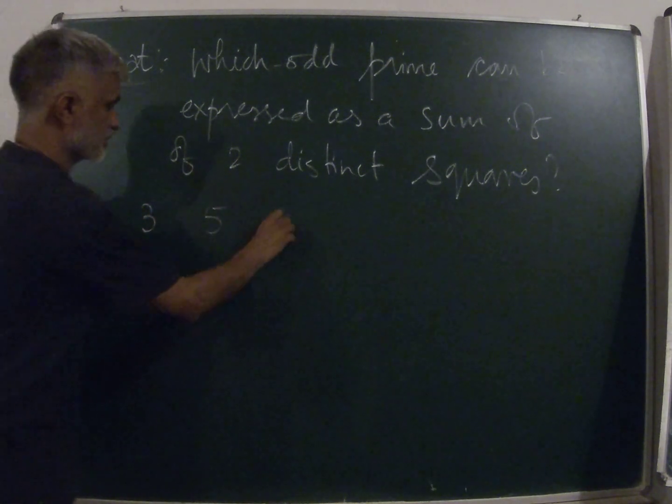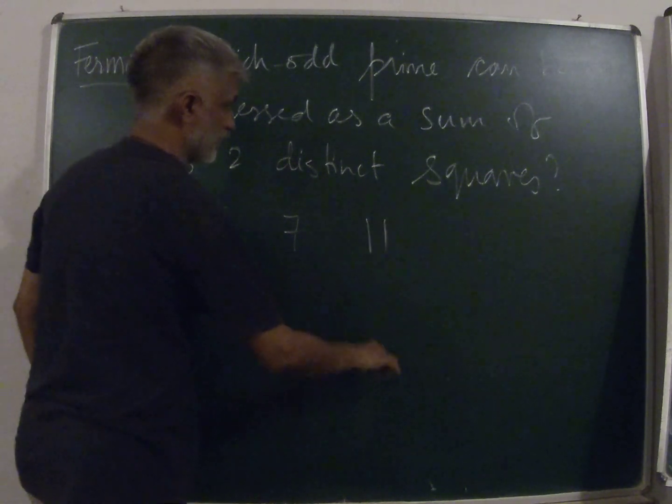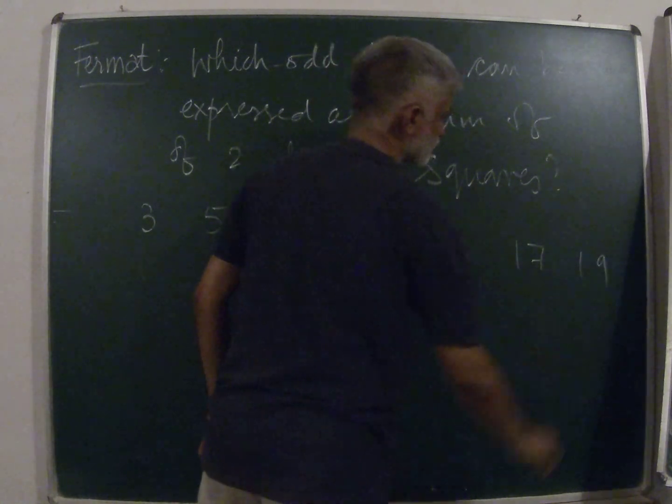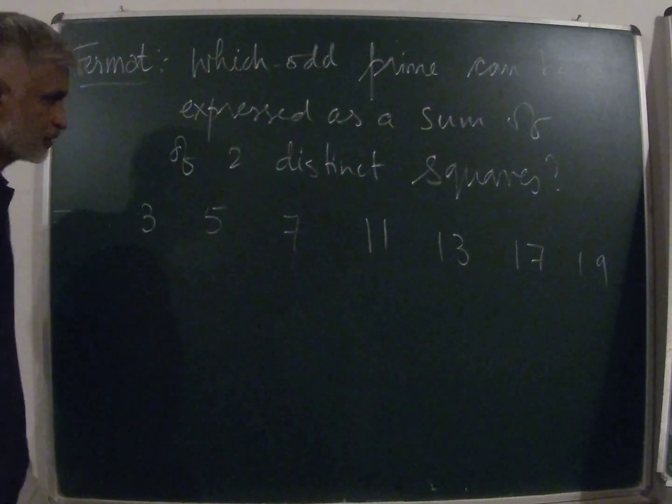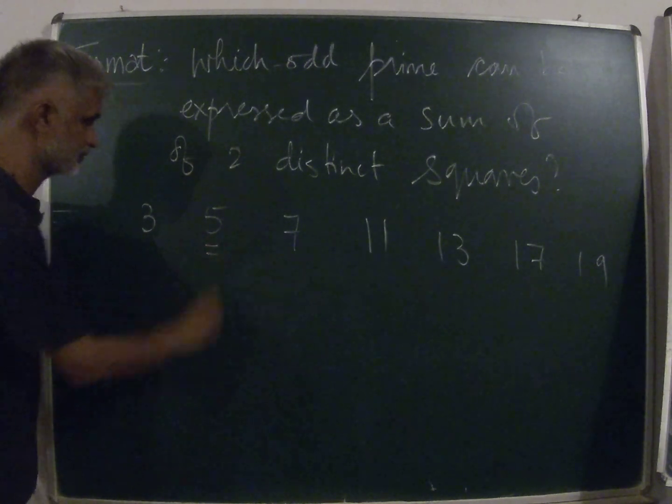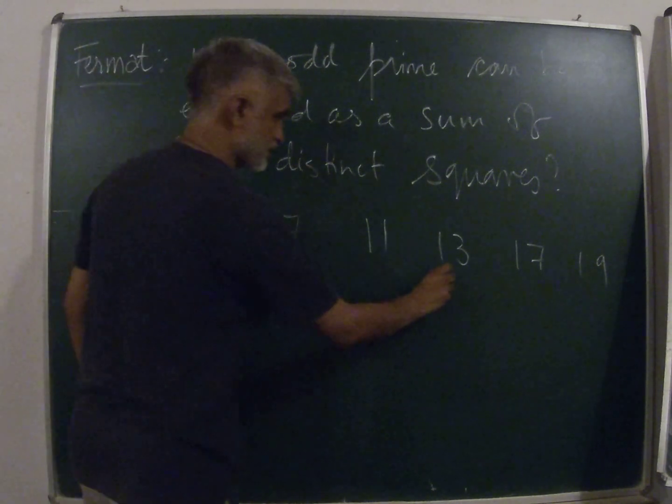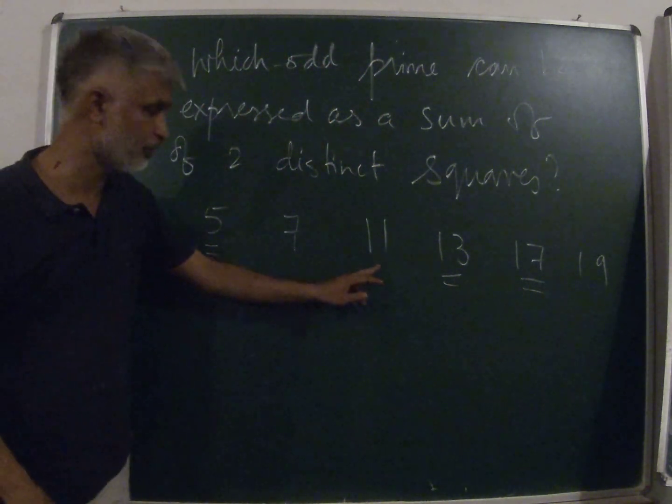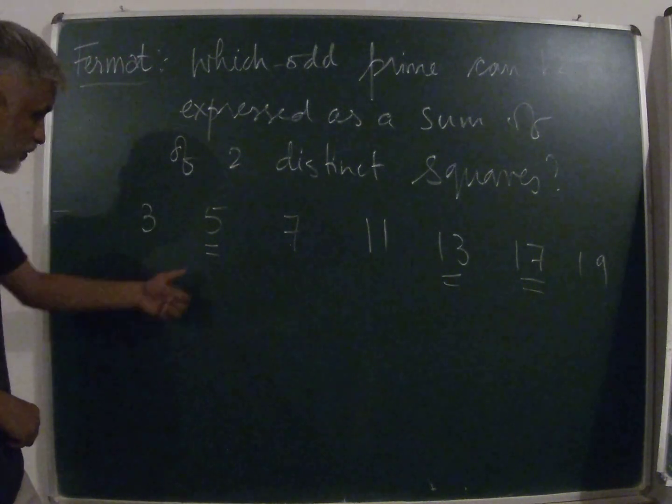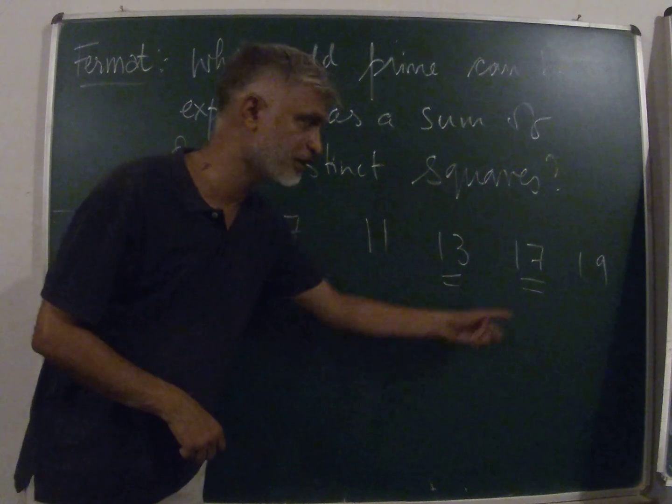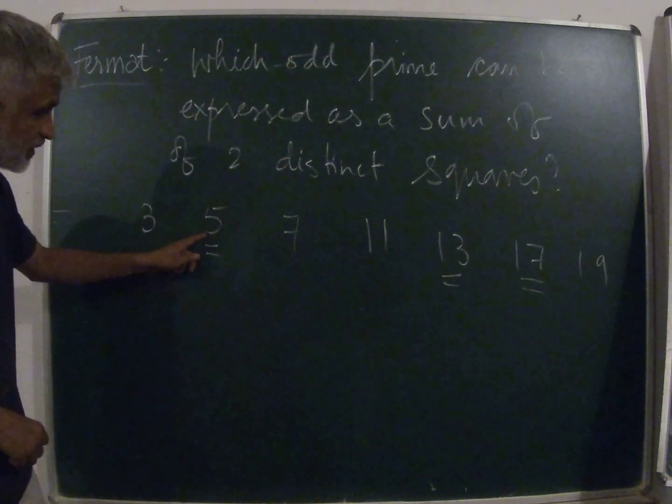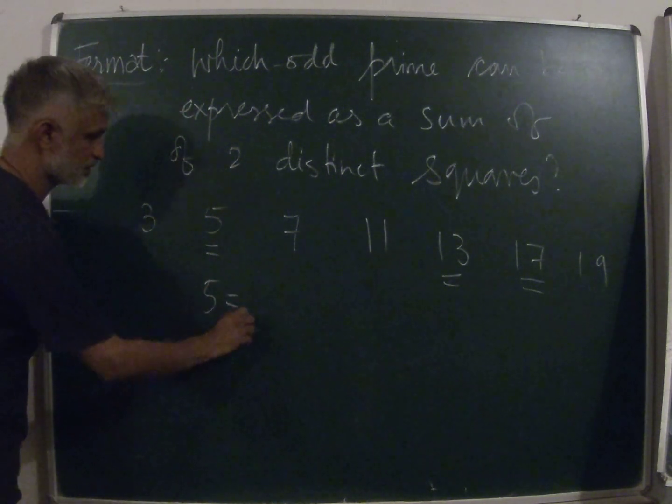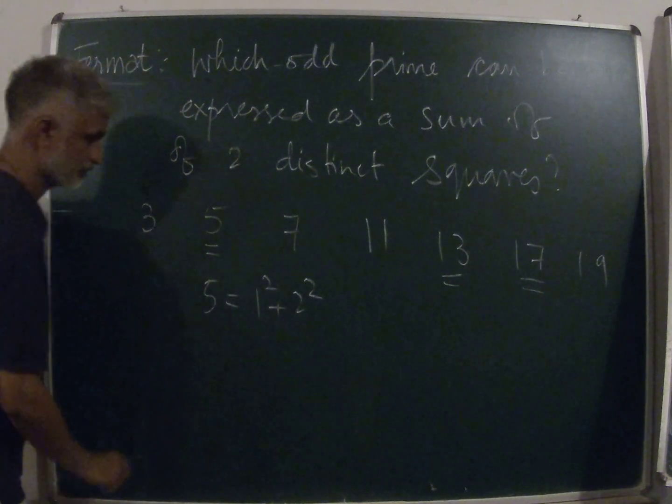If you look at the odd primes, then we need to check some of them, which one of them are expressible as a sum of two distinct squares. It will turn out that these primes will be possible. The rest of them are primes of the form 4n plus 3, while these are primes of the form 4n plus 1 because they leave a remainder of 1 when you divide by 4.